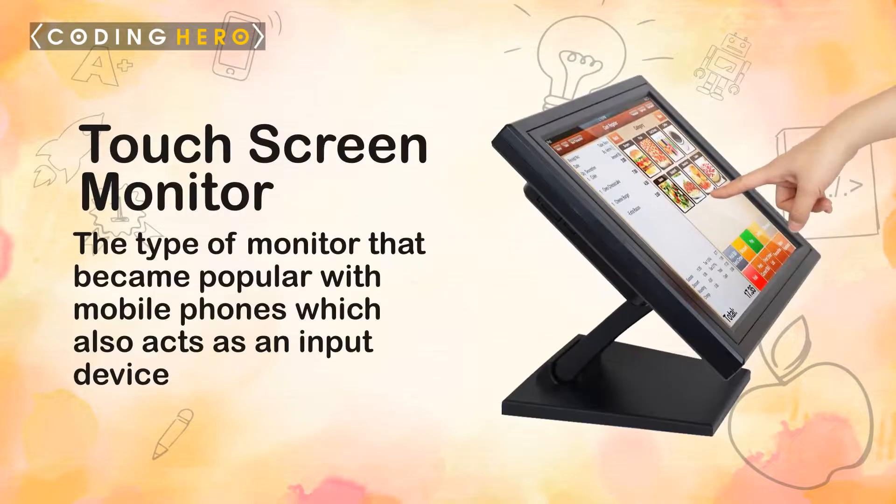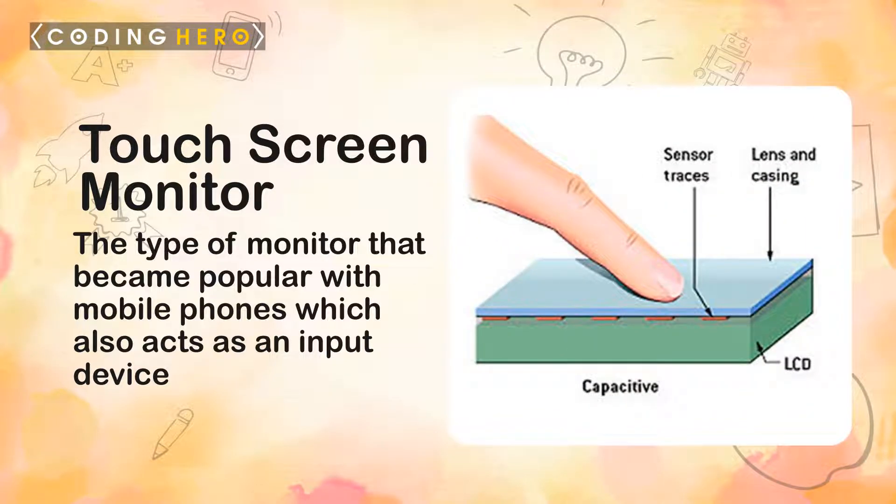Touchscreen monitor. The type of monitor that became popular with mobile phones is a touchscreen monitor. A touchscreen is a computer display screen that is also an input device. The screens are sensitive to pressure, and users interact with the computer by touching pictures or words on the screen.